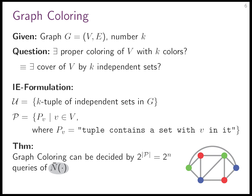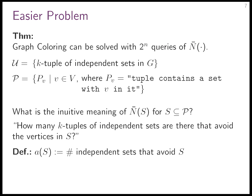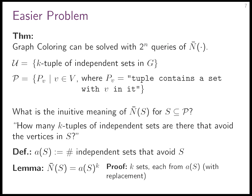What is N̄ in this case? It means how many k-tuples of independent sets are there that avoid the vertices in S? Let's define a small function: a(S) equals the number of independent sets that avoid S. Then N̄(S) equals a(S)^k, because we have k separate independent choices. From now on let's focus on a(S), and at the end raise it to the power k.